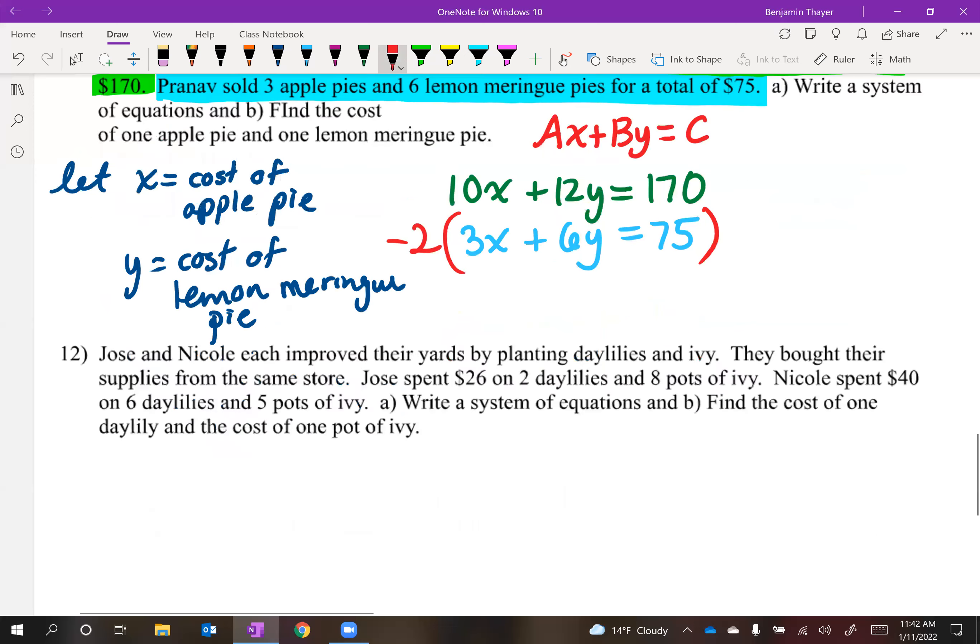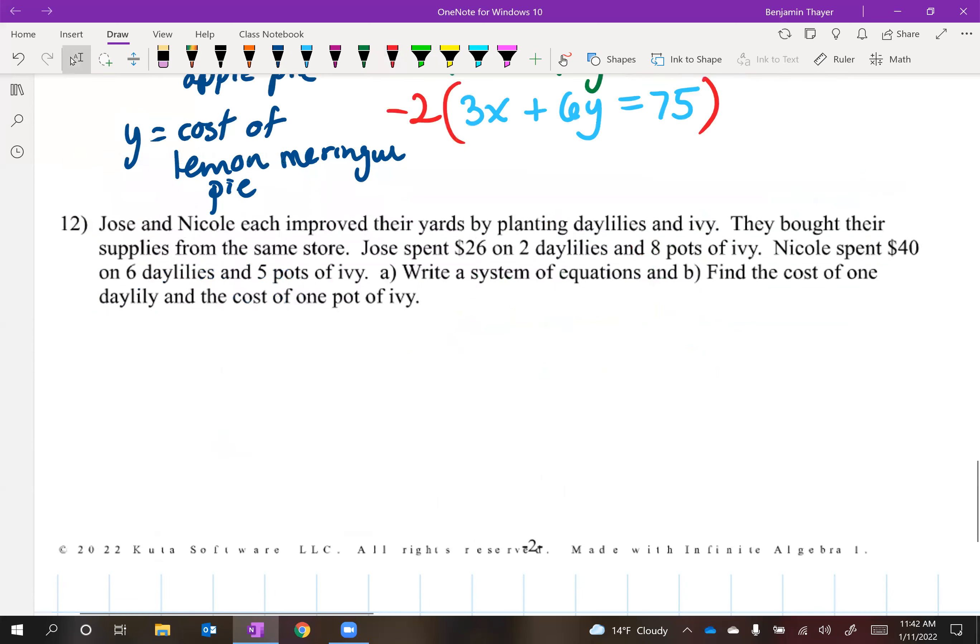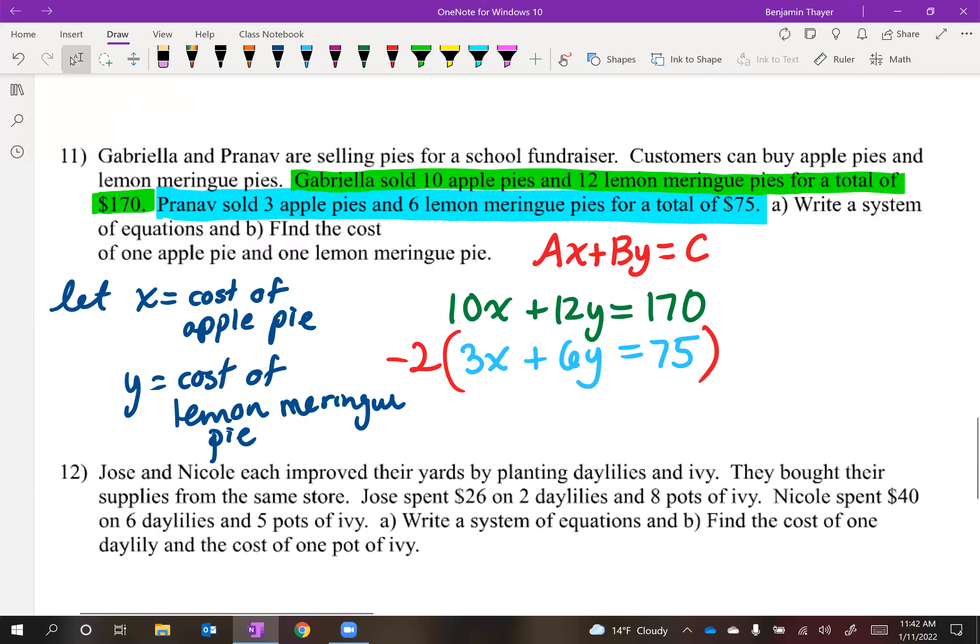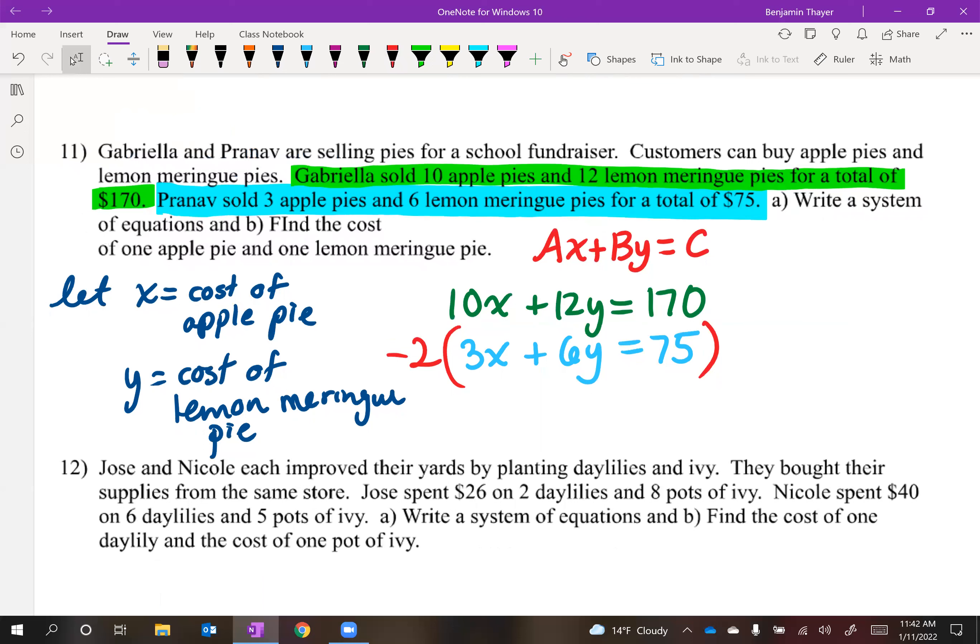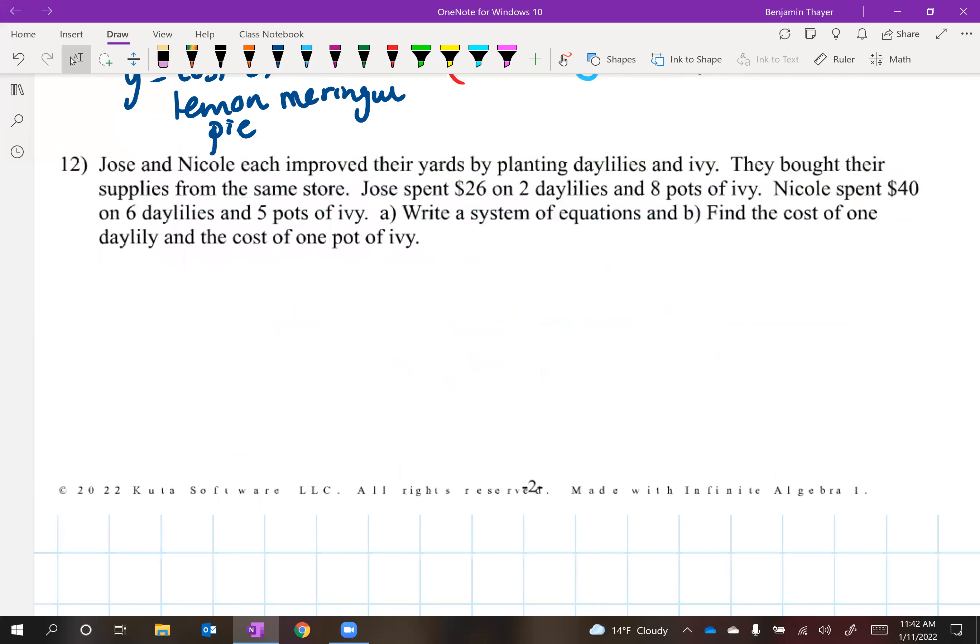Let's take a look at number 12. If you need to pause this video on this so you can write it down, please do so and then resume. And then we'll take a look at 12. Jose and Nicole each improved their yards by planting daylilies and ivy. They bought their supplies from the same store. Jose spent $26 on two daylilies and eight pots of ivy. So we'll highlight that. And Nicole spent $40 on six daylilies and five pots of ivy. We don't know the cost of a daylily or the cost of ivy. So let's write that down.